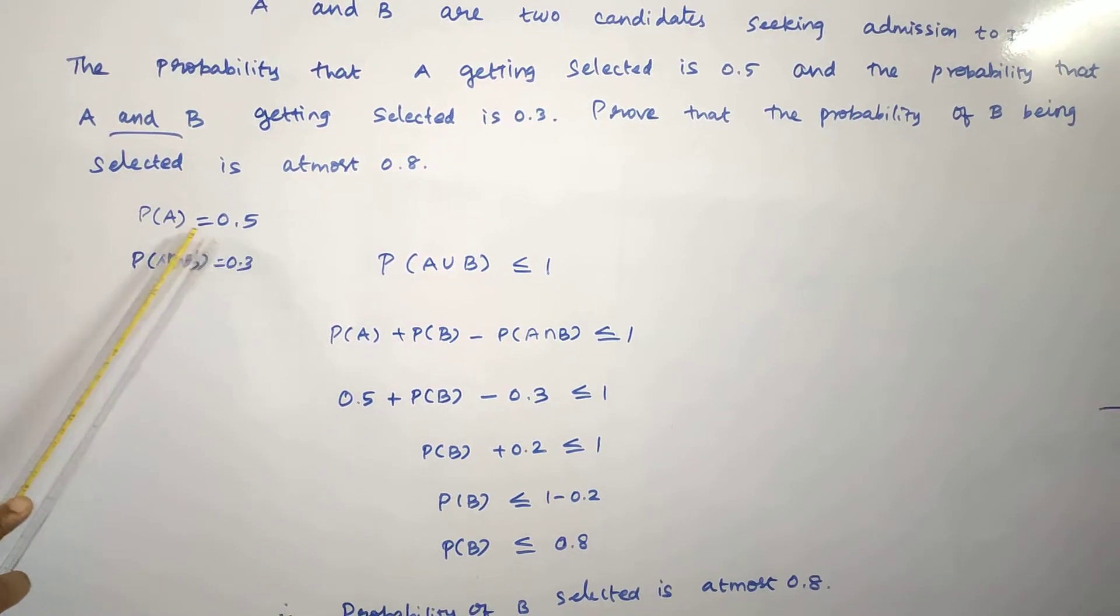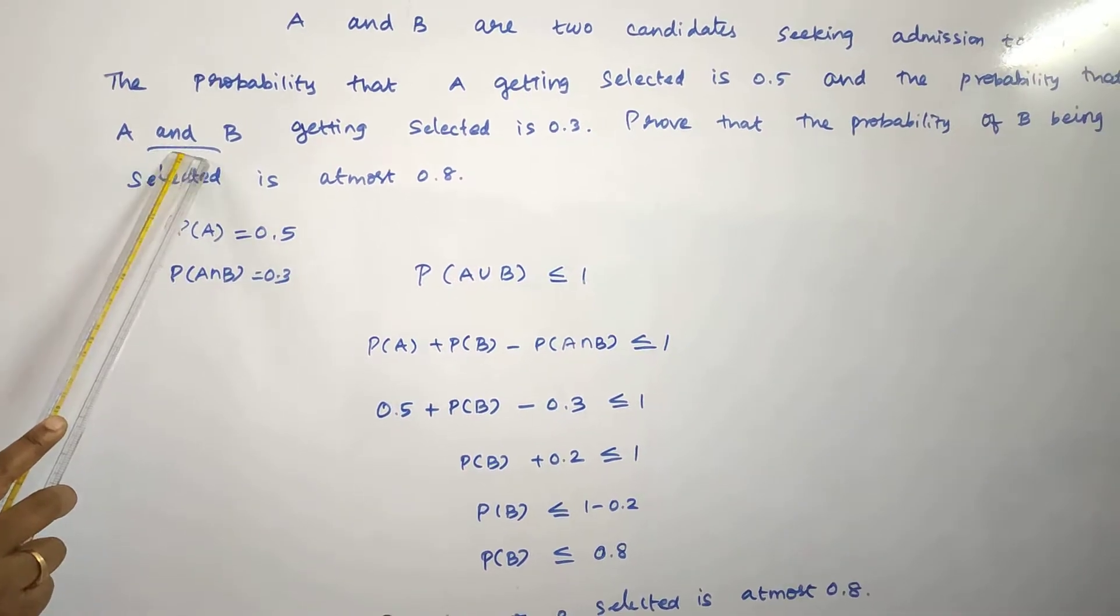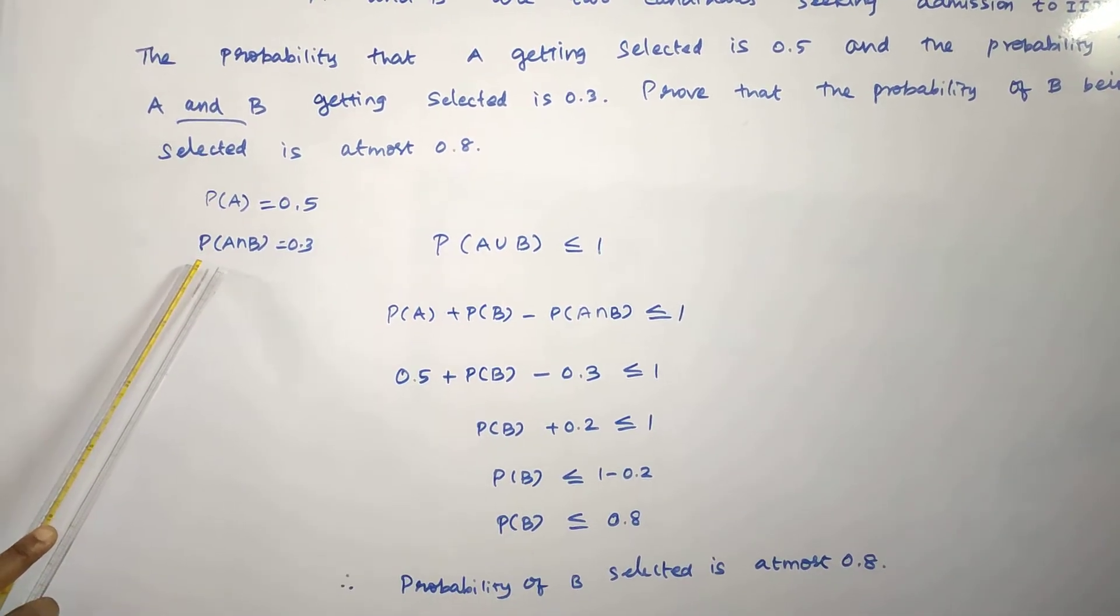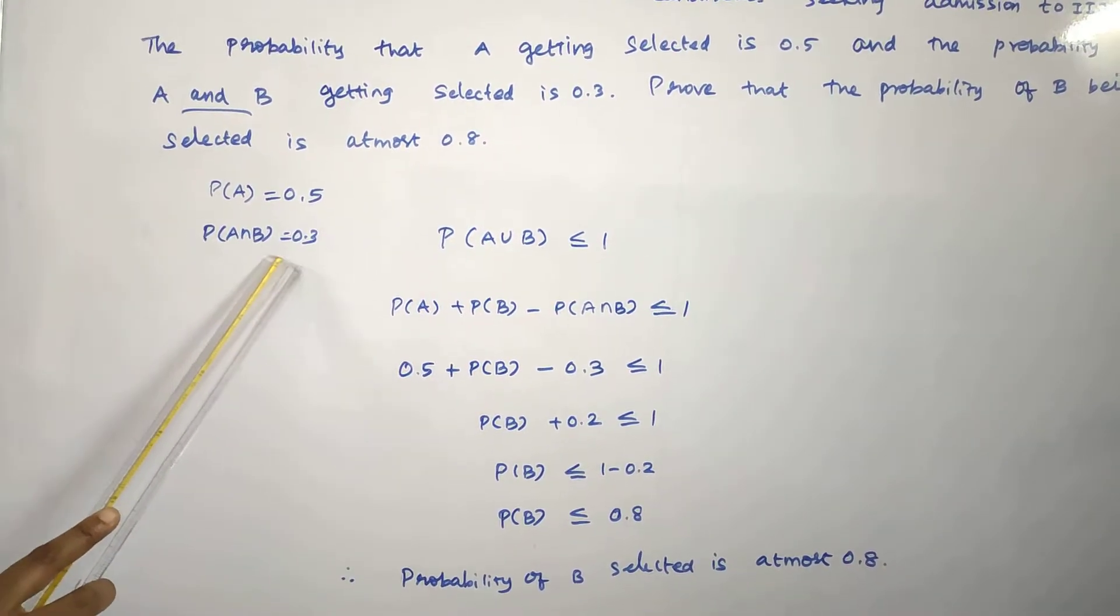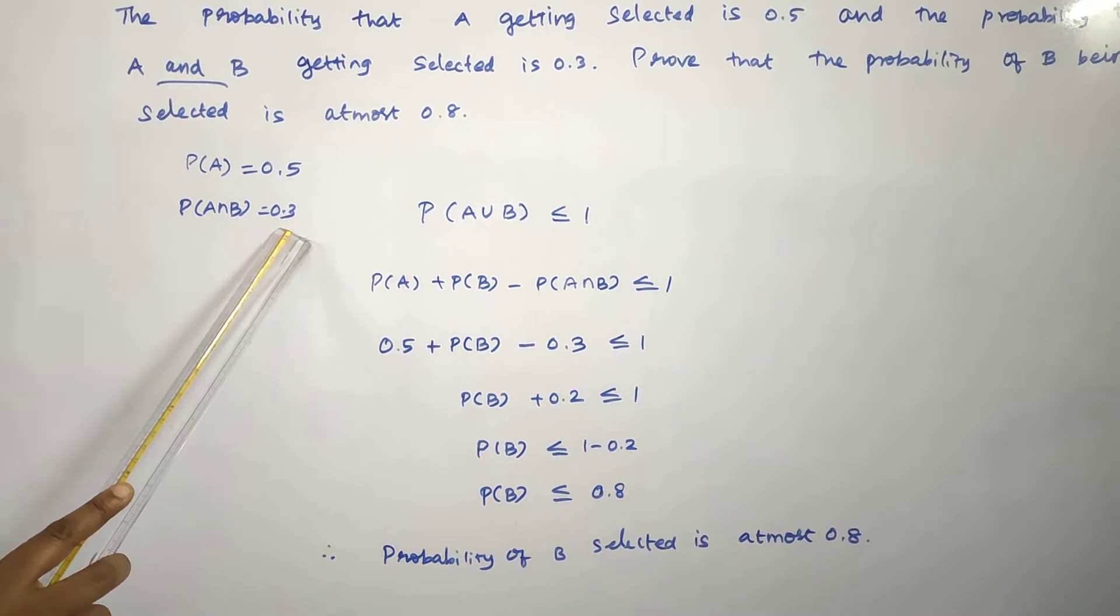P of A, probability of getting selected A is 0.5. Both intersection, or union and intersection. The probability is 0.3. P of A intersection B is 0.3.